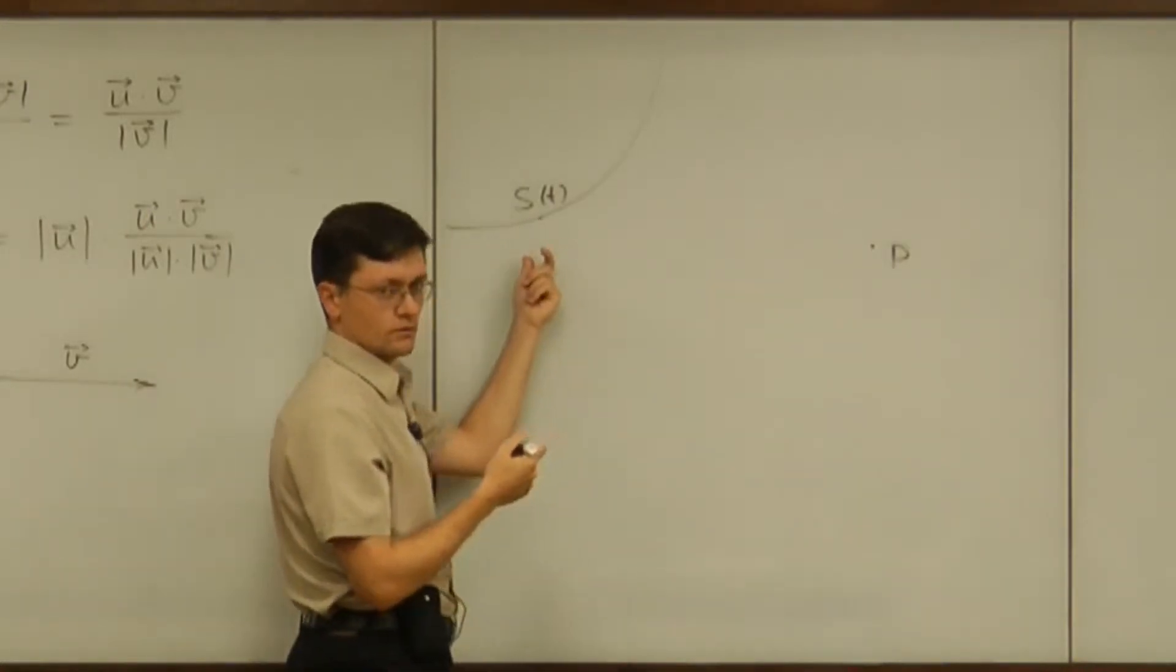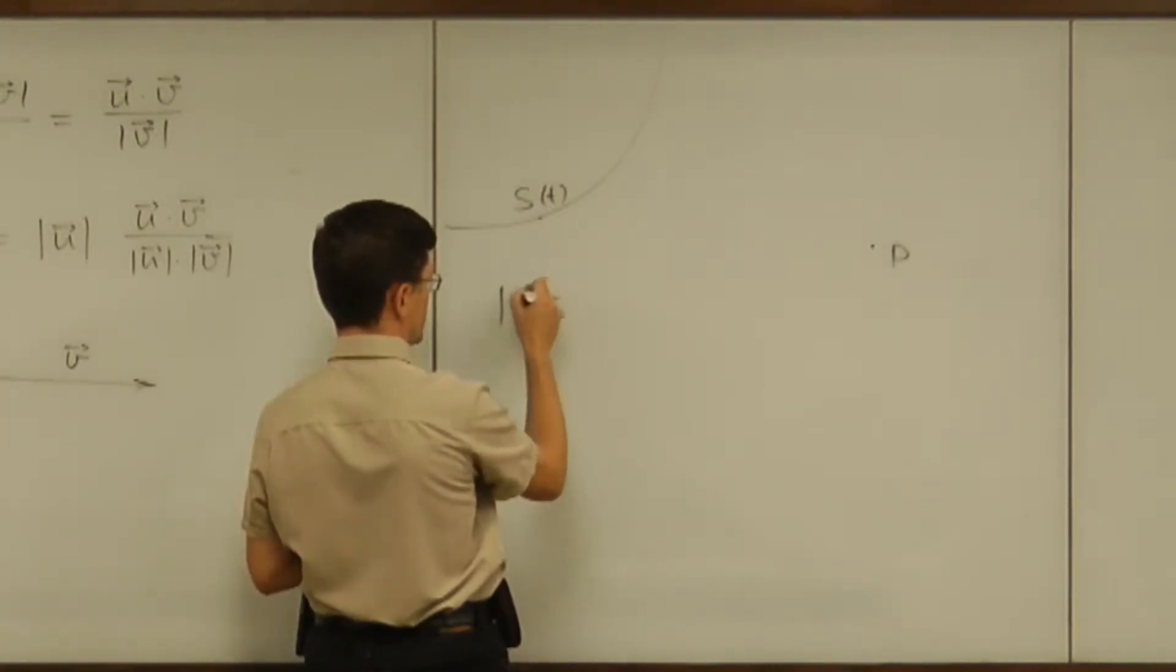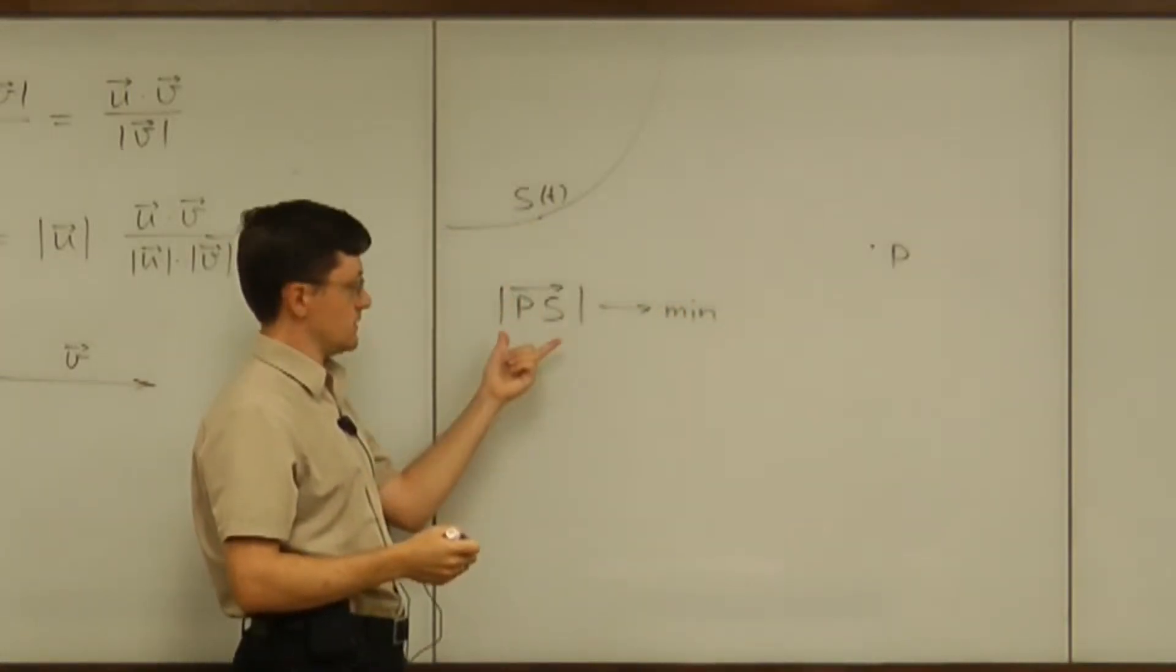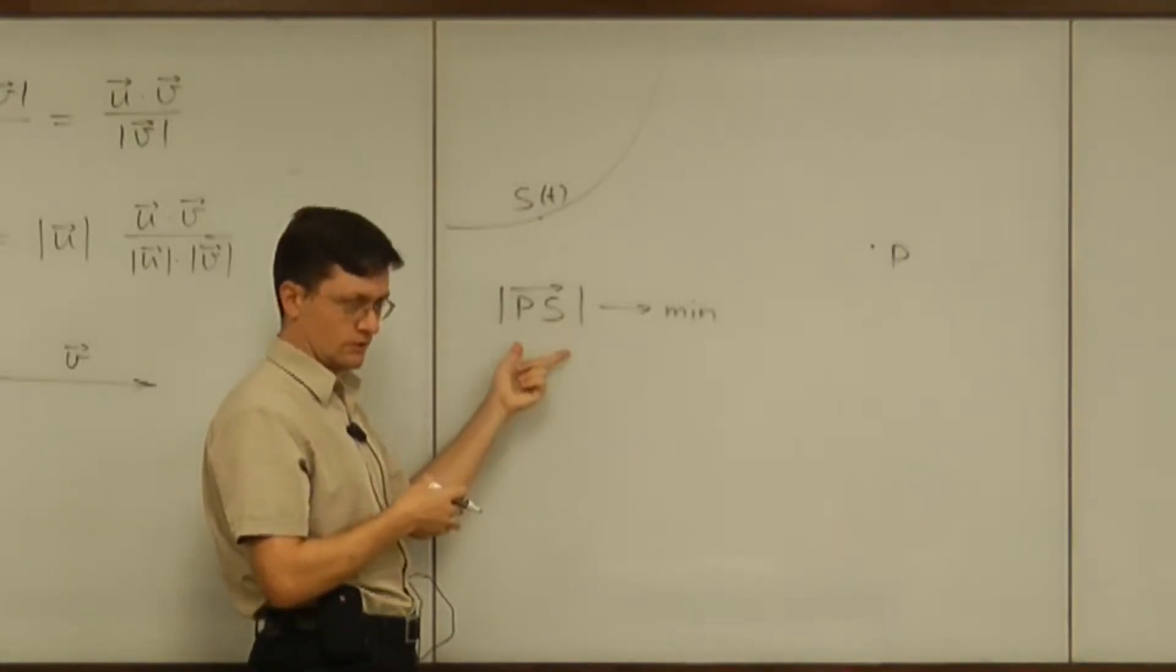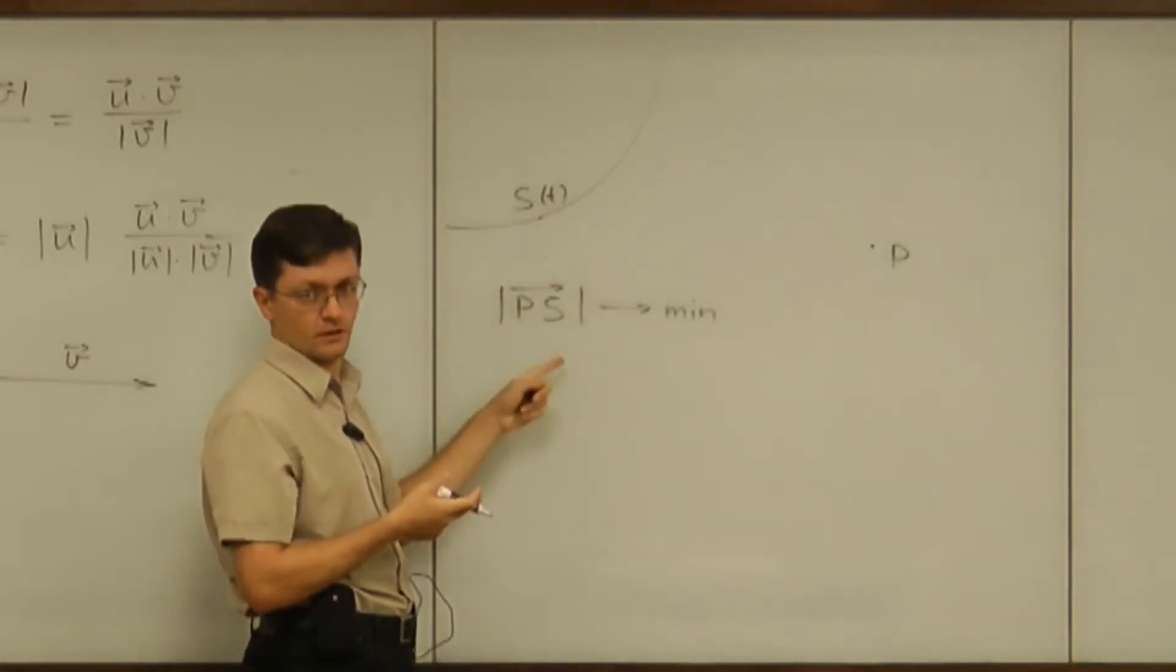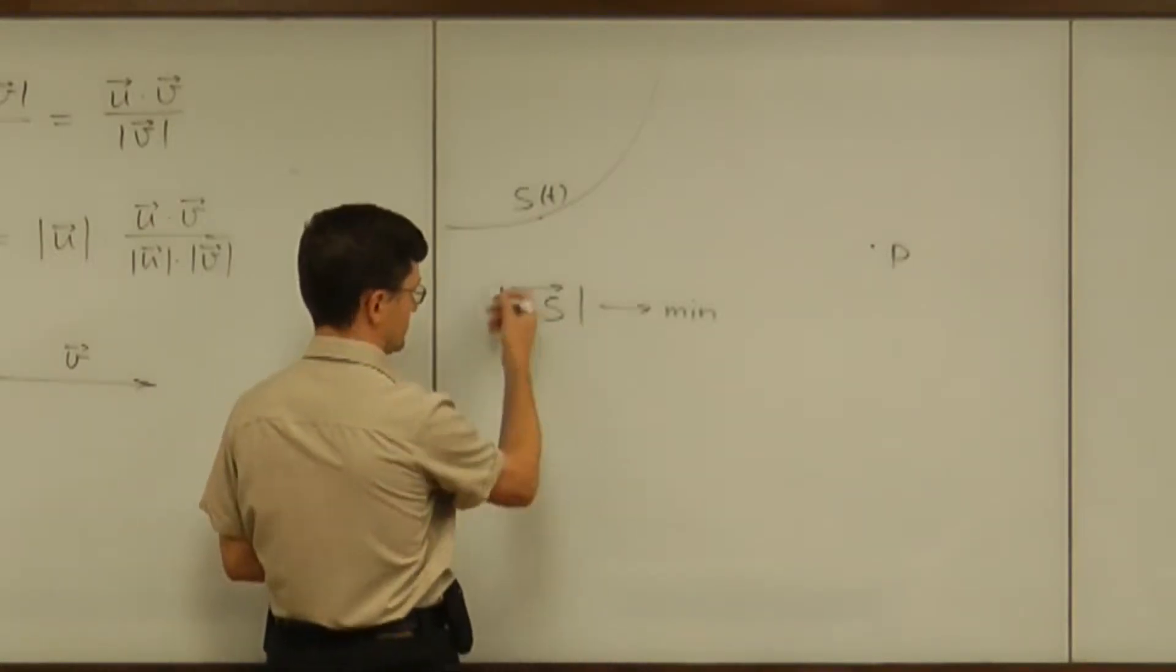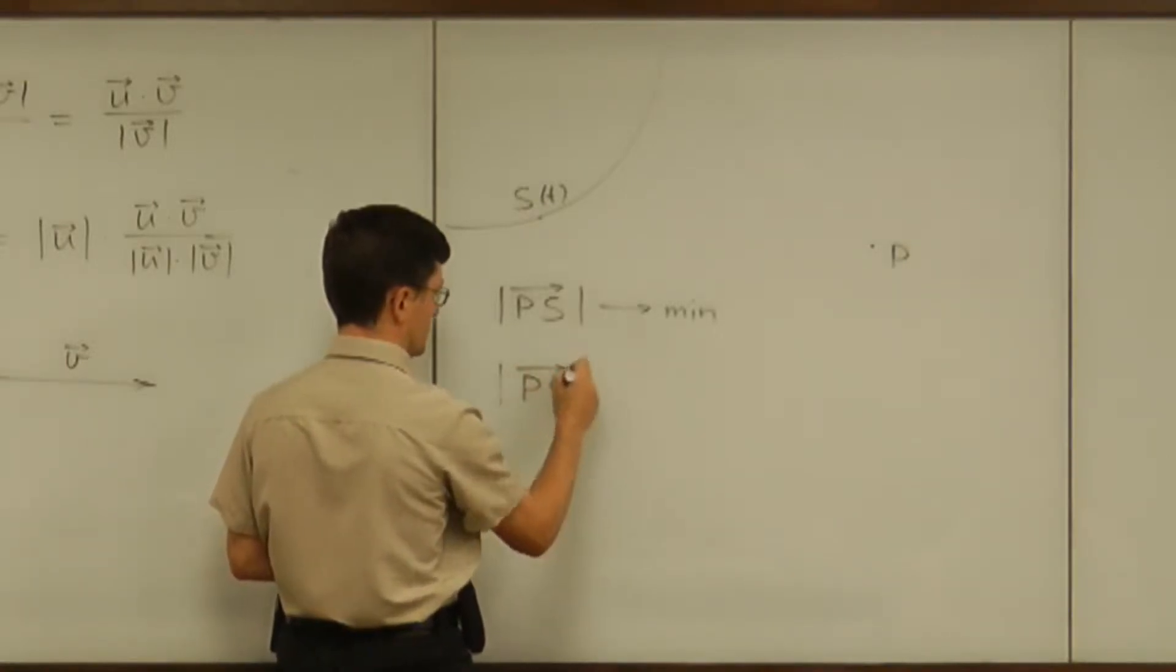Minimizing the distance between the point and the curve amounts to minimizing the magnitude of the vector PS. And minimizing that quantity amounts, from a calculus point of view, to differentiating that quantity with respect to that time parameter and then equating that to zero, finding critical points.